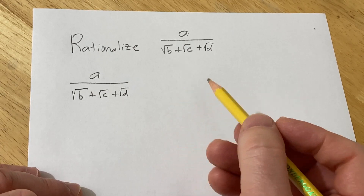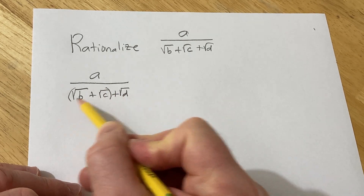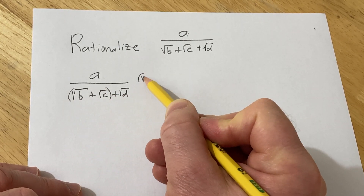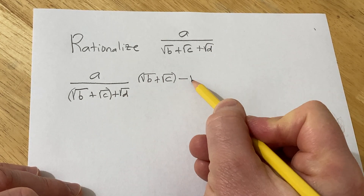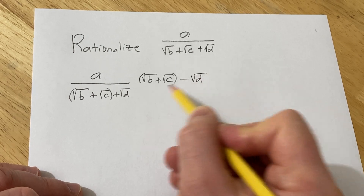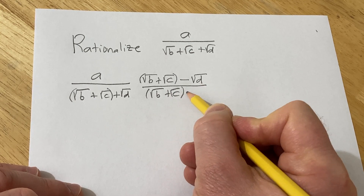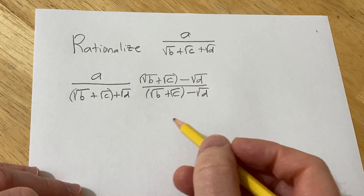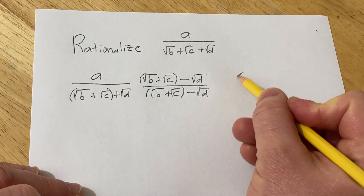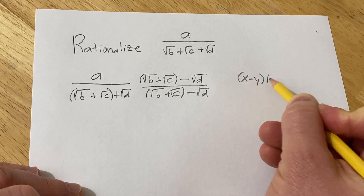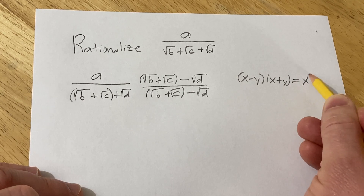We're just going to rationalize twice. The first time, I'm going to multiply by the conjugate. So it'll be parentheses square root of b plus square root of c, and then minus — you want to switch the sign — square root of d, over square root of b plus square root of c minus square root of d. Now we're going to apply the difference of squares formula: x minus y times x plus y equals x squared minus y squared.